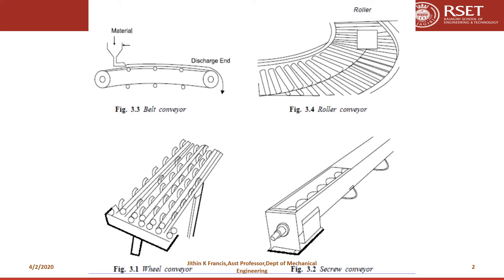The first one is a belt conveyor, the next one is a roller conveyor, then wheel conveyor, screw conveyor. Each of them are conveyors, but the nature of operation just varies. In a belt conveyor, there is a belt and the material has been dropped from a chute and it discharges at a particular end.